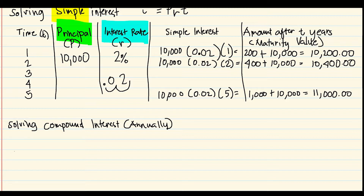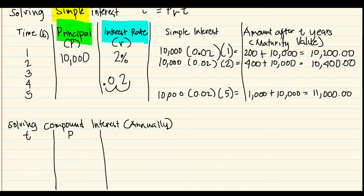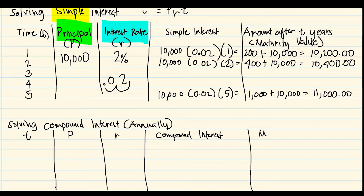For compound interest, we set up the same table: time, principal, interest, compound interest, and maturity value — for years one through five.